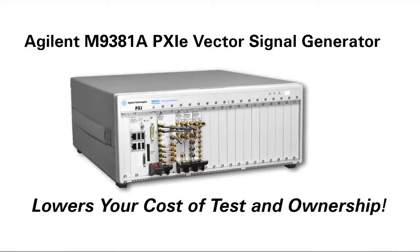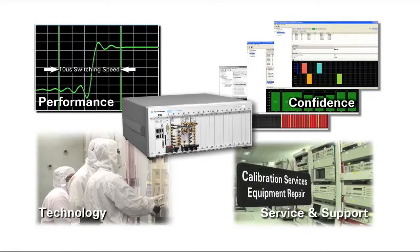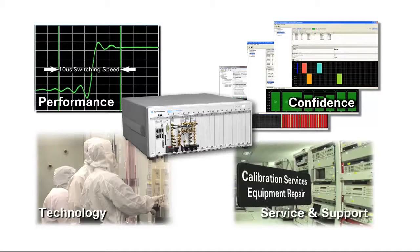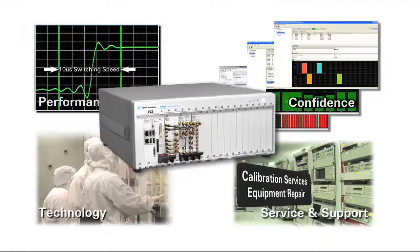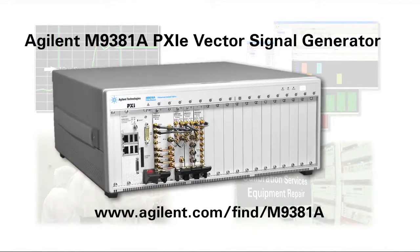The Agilent M9381A VSG lowers your cost of test and ownership by design. The VSG's speed, signal quality and application specific software maximize test throughput. Agilent's NIST traceable calibration, express warranty and license key upgrades give you measurement confidence and the performance you need when you want it. Put the Agilent M9381A VSG to work to reduce your cost of test.